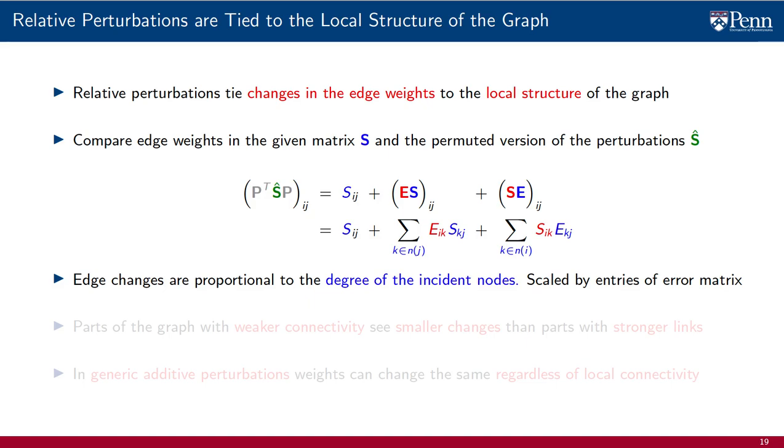That is, the change in the shift operator entry S ij, which is the one that connects nodes i and j, is affected by the weights S k j connecting node j to its neighbors and the weights S i k connecting node i to its neighbors, with these quantities scaled by corresponding error matrix entries.